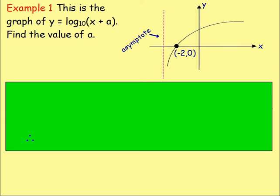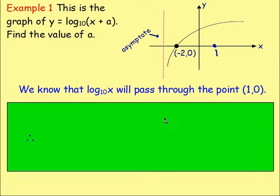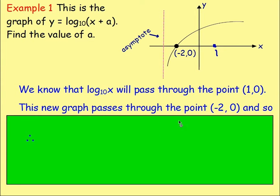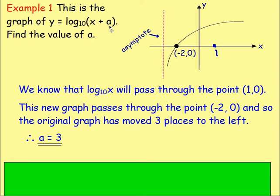Example 1: This is the graph of y equals log base 10 of x plus a. Find the value of a. Because we have log base 10 of something, we know that graph should always pass through (1, 0). However, we can see this graph does not pass through (1, 0) — it passes through (−2, 0). It's moved 3 units to the left. Because it's moved in the negative direction, instead of log base 10 of x we'll have log base 10 of x plus something — the plus moves it in the negative direction. Because it moved 3 places, the value of a is 3. Well done, Sandy!